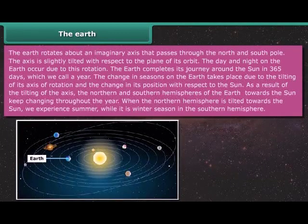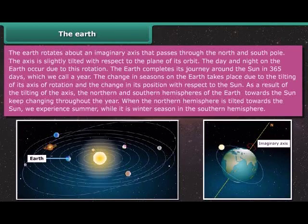The Earth rotates about an imaginary axis that passes through the North and South Pole. The axis is slightly tilted with respect to the plane of its orbit. The day and night on the Earth occur due to this rotation. The Earth completes its journey around the Sun in 365 days which we call a year. The change in seasons on the Earth takes place due to the tilting of its axis of rotation and the change in its position with respect to the Sun. When the northern hemisphere is tilted towards the Sun, we experience summer while it is winter season in the southern hemisphere.